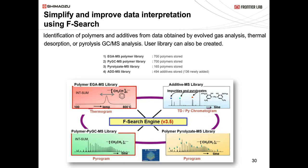F-Search is a library for additives, EGA, and polymers that we recommend using in conjunction with your MS library. A powerful feature is the ability to build your own user library—run your standards, save them, and create your own in-house library for failure and contamination analysis on your samples. The polymer EGA library and polymer PyGCMS library are integrated whole-chromatogram libraries, while the additive MS library and polymer pyrolyzate MS library allow individual peak-by-peak integration.